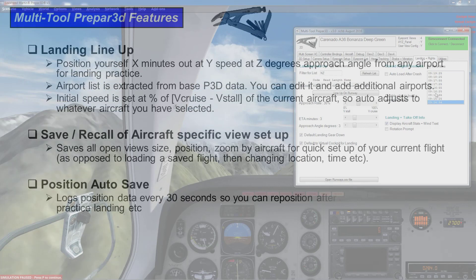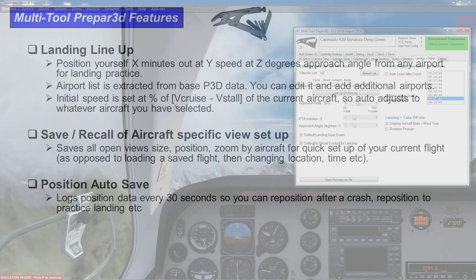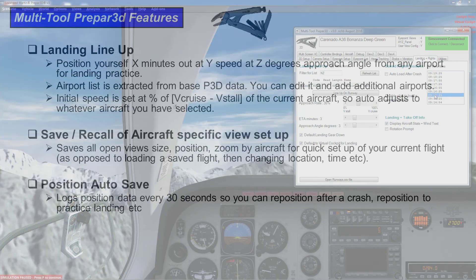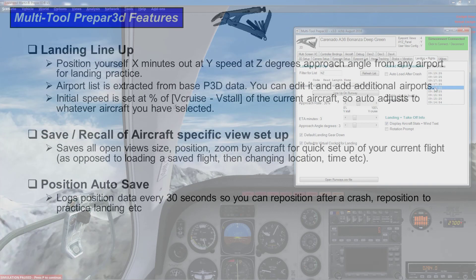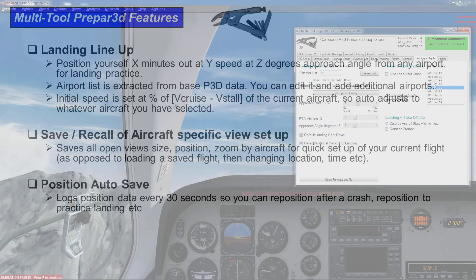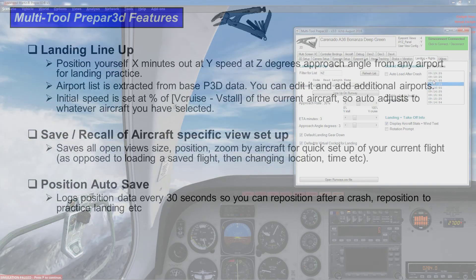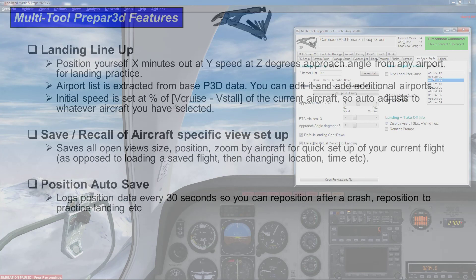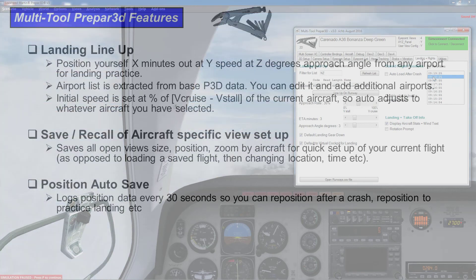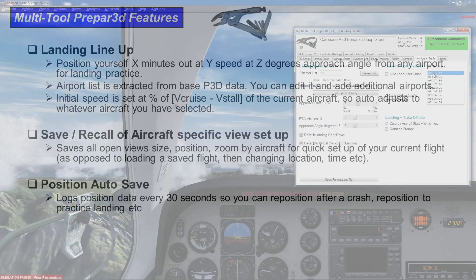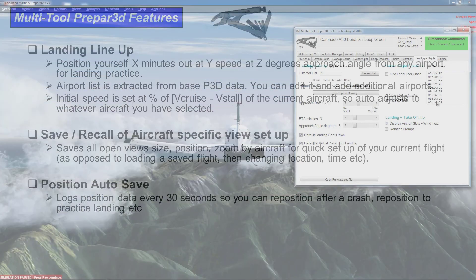Auto-saving of position logs your position every 30 seconds and you can recall about 5 minutes backwards. So in the event of a crash you can go back a minute or two minutes, or if you're practicing landings you can go back a minute or two minutes as needed.